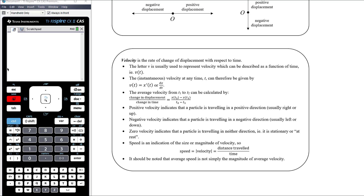Average velocity is change in displacement over change in time — essentially the gradient of a straight line. A really common error is to subtract two velocities and divide them by two times, but velocity over time is acceleration, not average velocity. So average velocity is change in displacement over change in time.